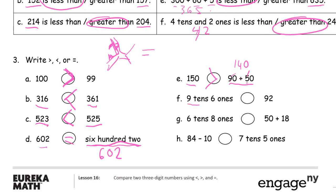9 tens, 6 ones. That's the number 96. So 96 and 92. 96 is greater than 92. 6 tens, 8 ones. That's the number 68. And if we add 50 and 18, 18 is 10 and 8. So if we're going to add these two numbers, 50 and 10 makes 60. And then 8 more. 68. So we're looking at 68 and 68. They're equal.